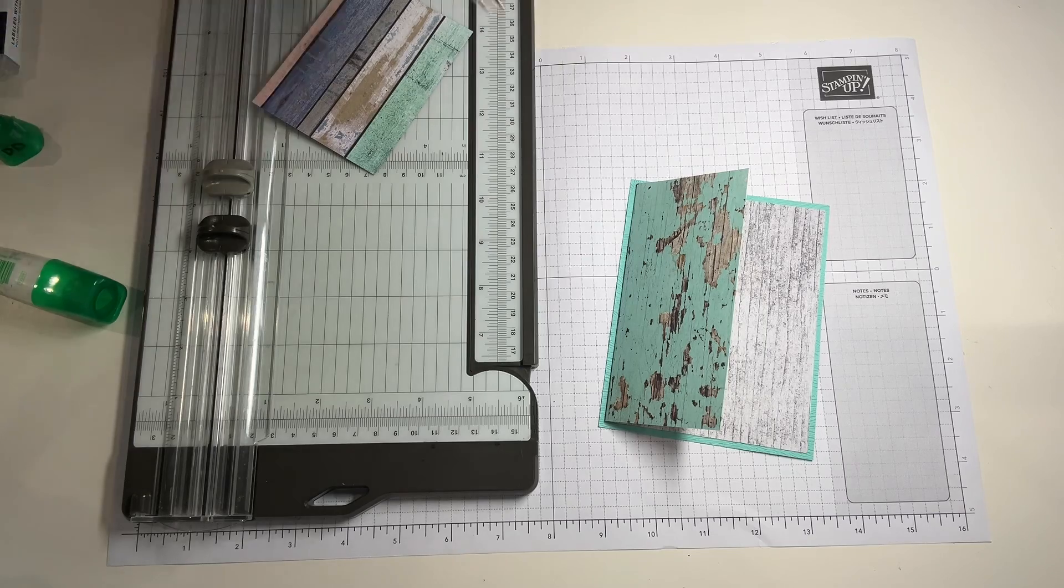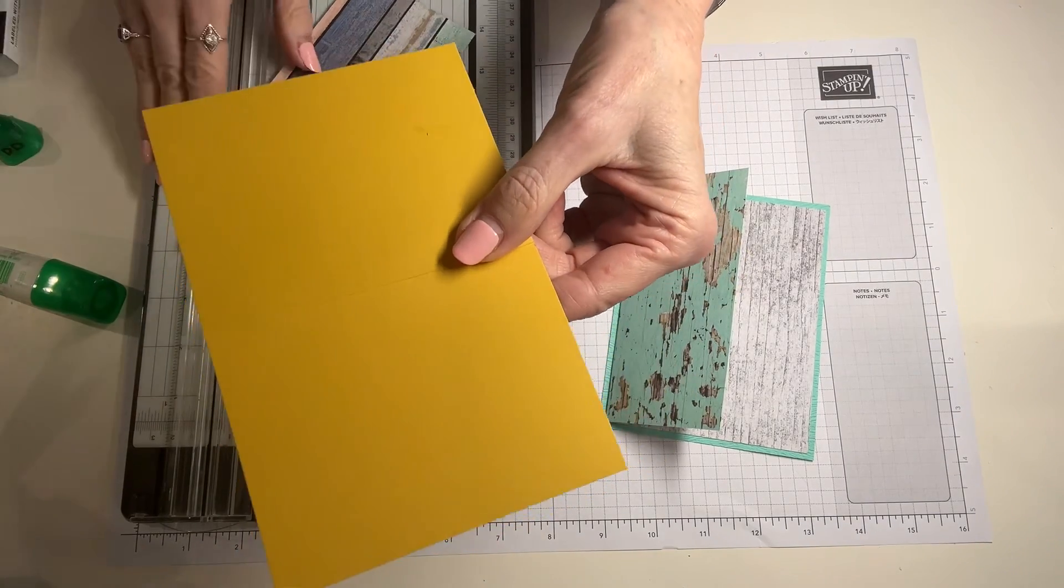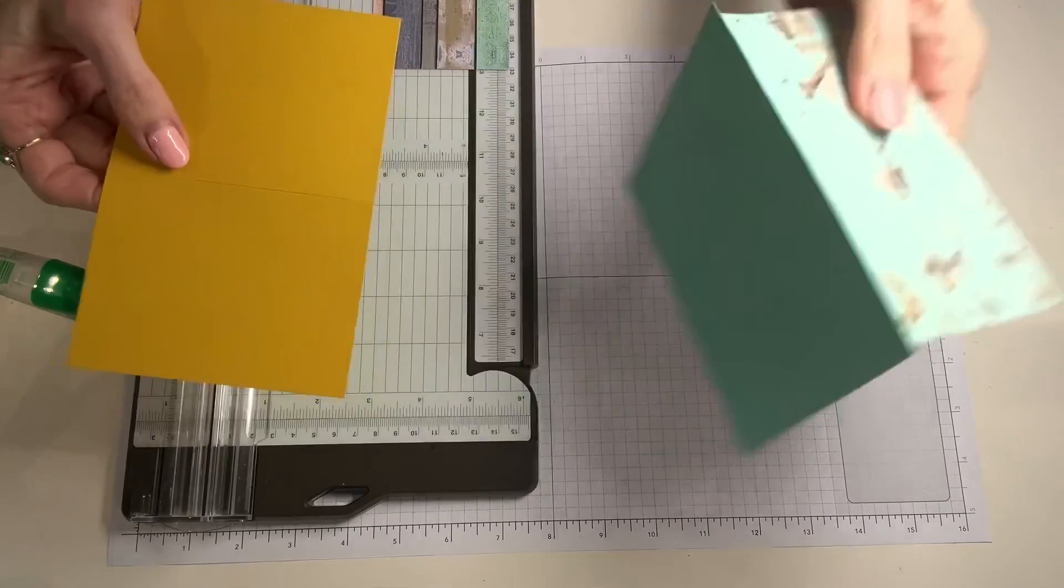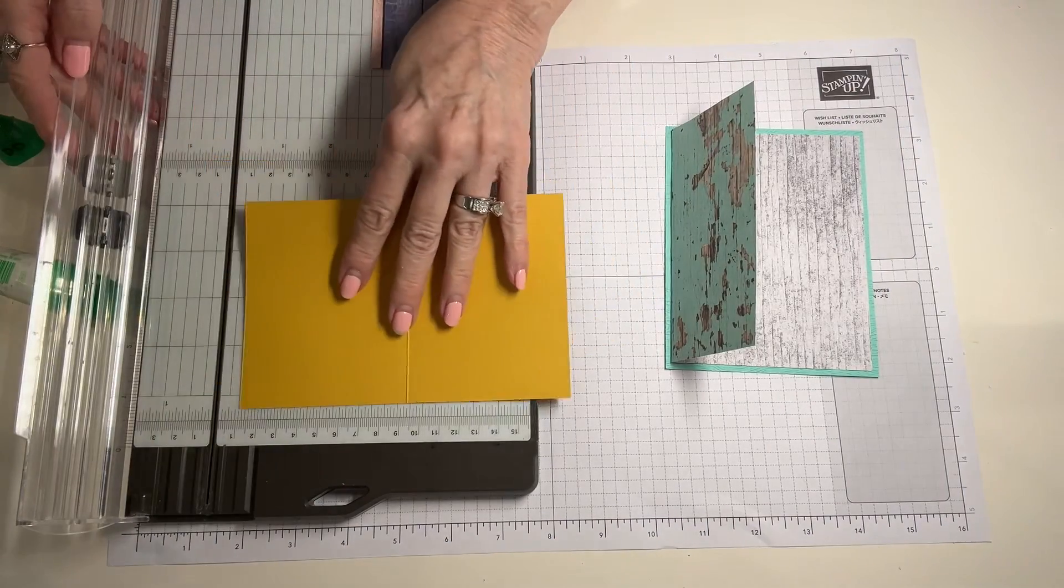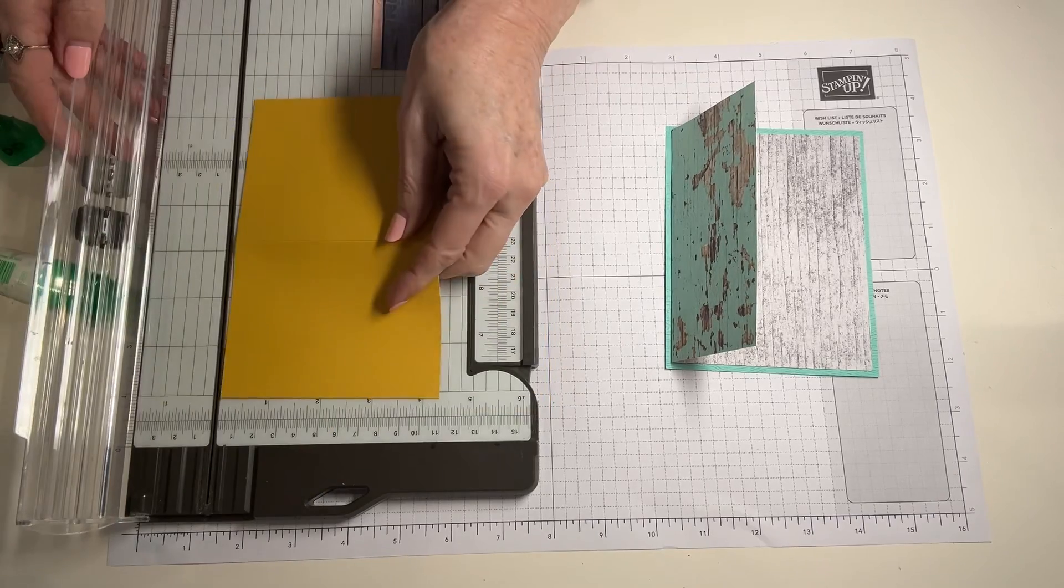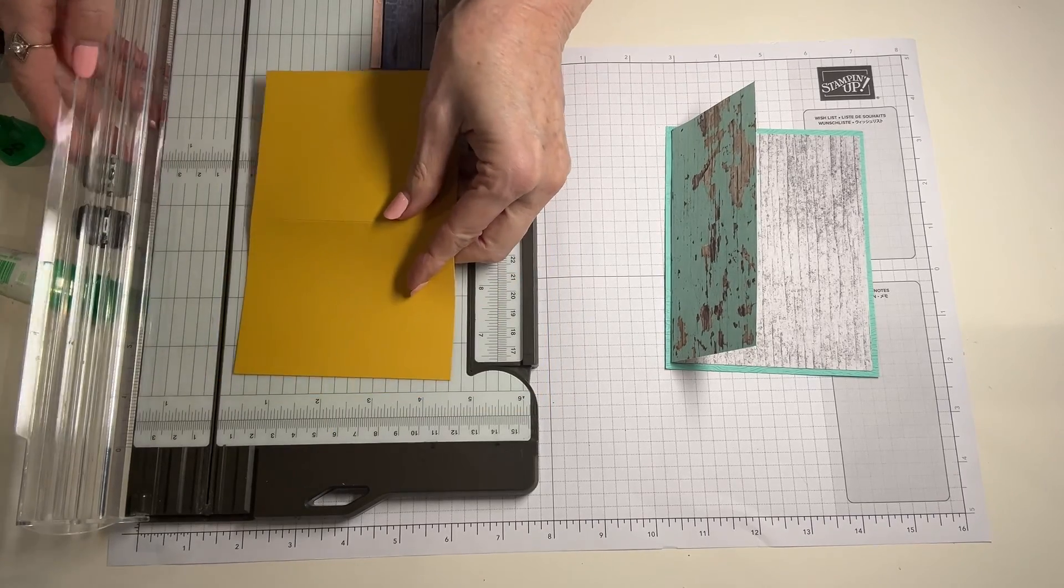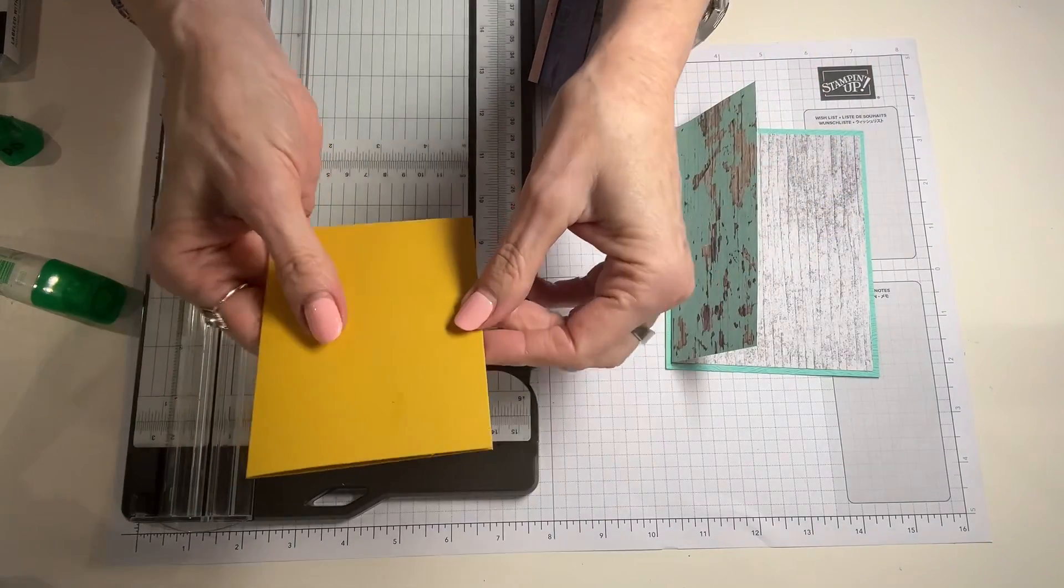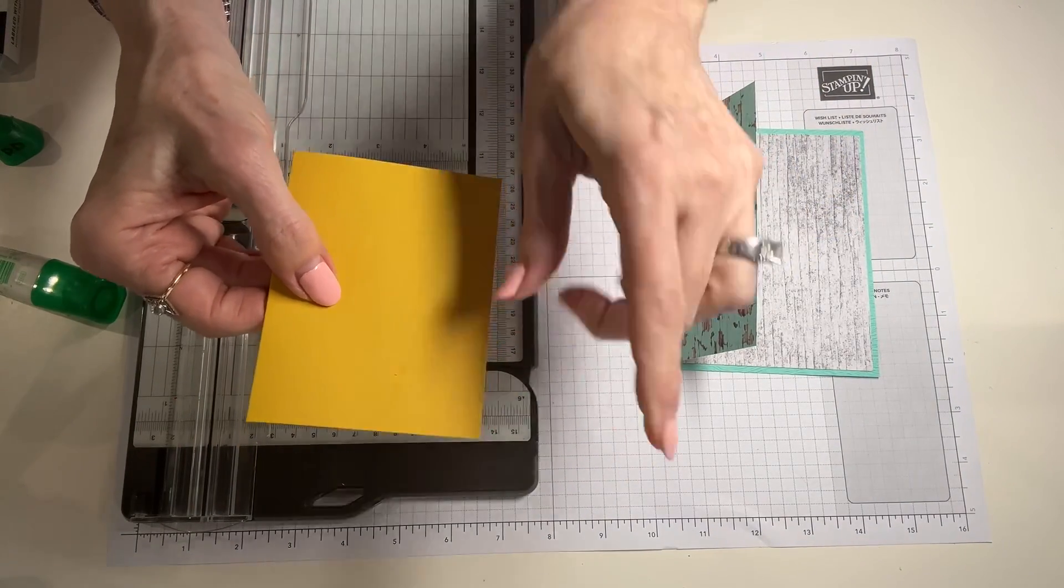Your next step is to cut a piece of cardstock in a different color but a color that's still going to look really pretty with your base. This you're going to cut at six and a half by four and a half, okay?